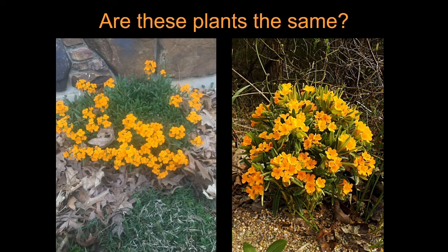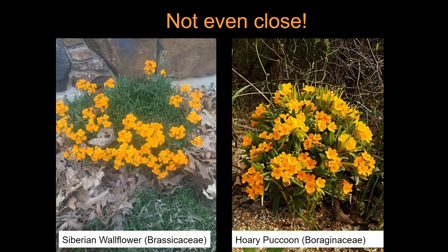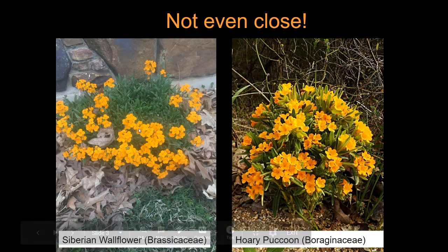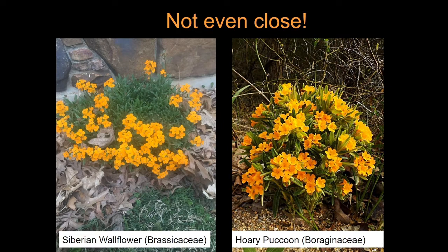So are these plants the same? Not even close. This one over here is some kind of wallflower — probably Siberian wallflower — and more importantly, it's in a totally different plant family: Brassicaceae, the brassica or crucifer family, known for having cross-shaped petals with four petals in a cross or X shape. That plant might possibly be edible, because there are a lot of edible members in this family, although some are terribly bitter.